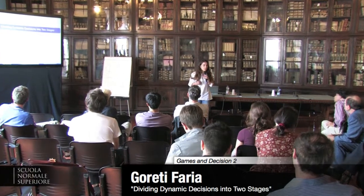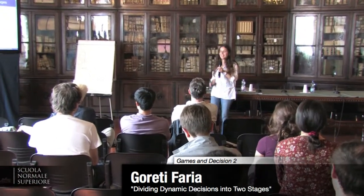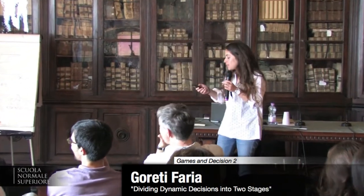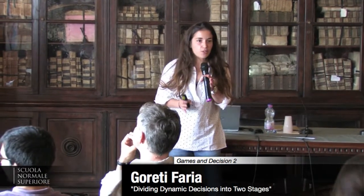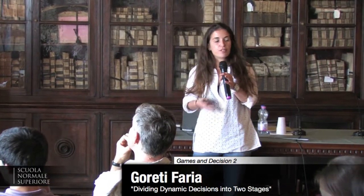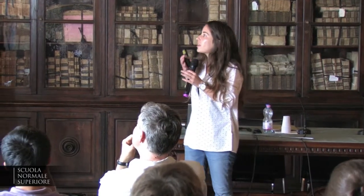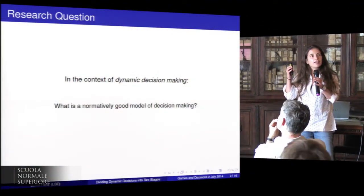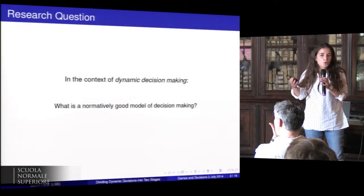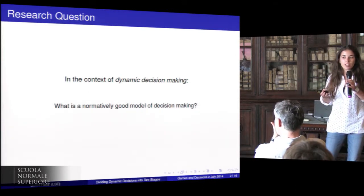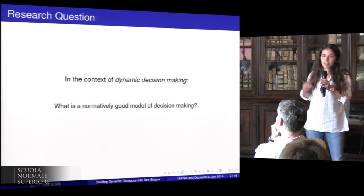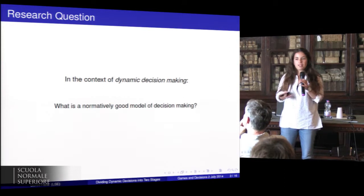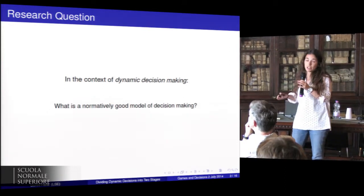This is going to be a very informal talk — really informal — and when I say this, I really mean it. There won't be any equations here. It's also very much work in progress, literally. It's more of an intuition that I have. It's not a full-fledged argument at all. I defend this claim that we should divide dynamic decisions into two stages, and I give an example to show how it has advantages, so I don't actually have an argument. That will be something I hope to achieve in the future, but for now it's just more of an example to give you an intuition of why this might be a good approach to dynamic decision-making.